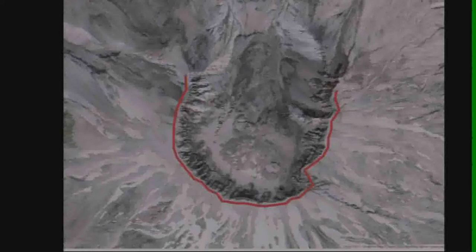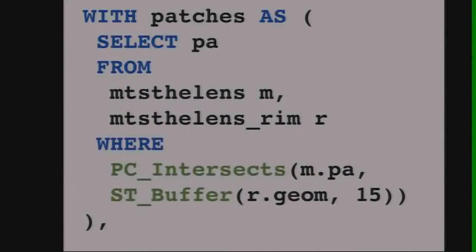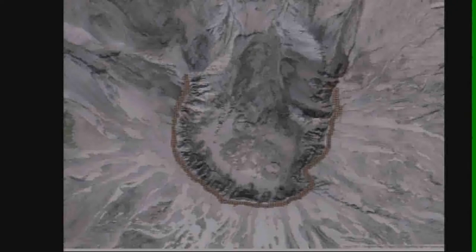It's a multi-step query, so I'm going to use my favorite PostgreSQL syntax — the WITH clause — which allows me to chain together a bunch of queries without having to nest them in subqueries, so I can look at them sequentially. First step: we get out our patches. We want all the patches that intersect a buffer of that rim geometry I just created, which gives me the first raw chunk of data to process. Here are the patches that come back — if you look closer, you can see the path, the buffer, and all the patches that intersected that buffer.